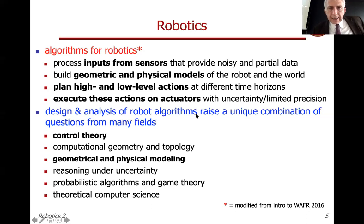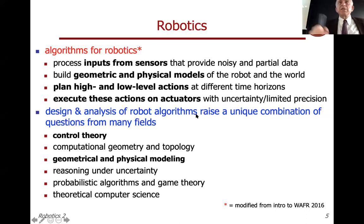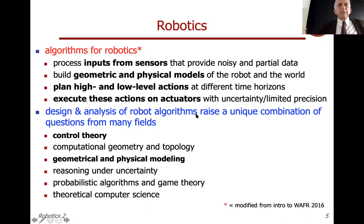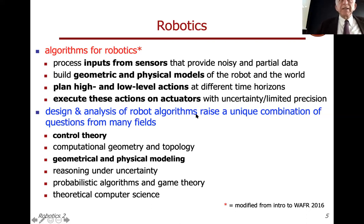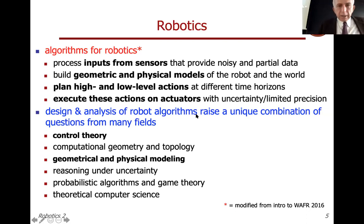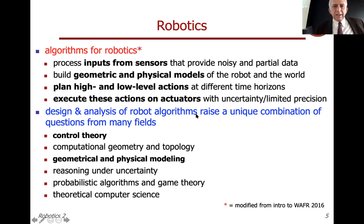Student question: 'I saw on your site we cannot do the Robotics 2 exam — can we still do the midterm?' Yes, you can still do the midterm because it's internal, part of the course. For example, if you have a good grade in the Robotics 2 midterm and want to complete the exam with a written exam on the remaining part, but at that time you haven't yet registered Robotics 1, you cannot do it — you must do Robotics 1 first, then complete the Robotics 2 exam. But the midterm can be done in any case.